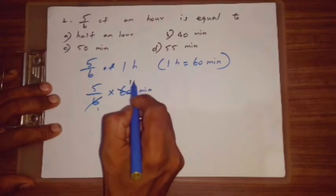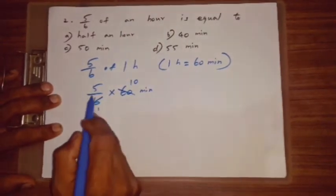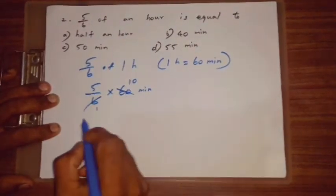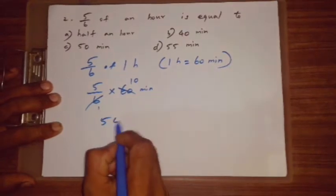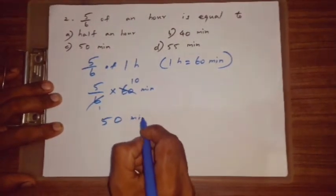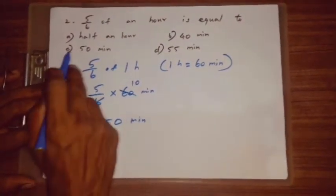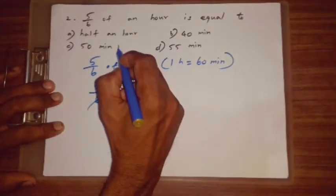So, 1, 6 are 6. 10, 6 are 60. So, 5 multiply 10. 50 minute. C is your correct answer.